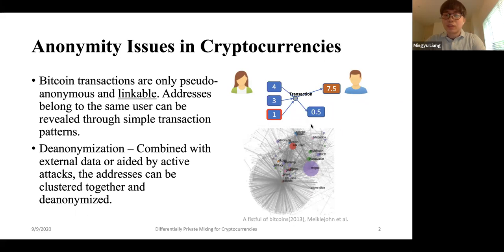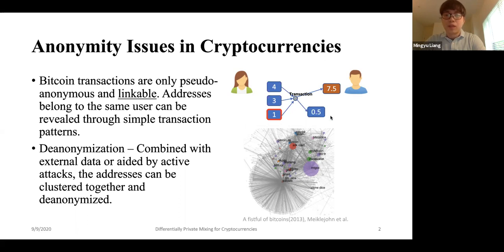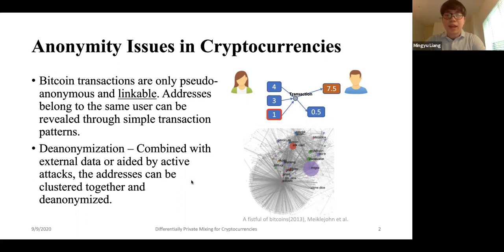And even more, it's usually not that hard to distinguish which output address belongs to Bob and which output address is the change back to Alice. Sometimes people reuse an output address to receive funds multiple times, while the address for change is usually freshly generated by the wallet. So one can just look on the blockchain to determine which is the change and grow the cluster of addresses that belong to Alice. It's possible to use this technique combined with some external data and even active attacks to do a large-scale de-anonymization.